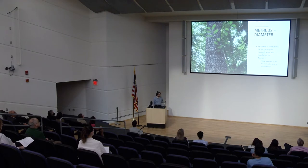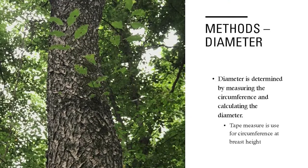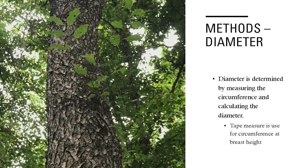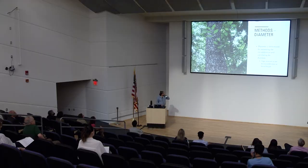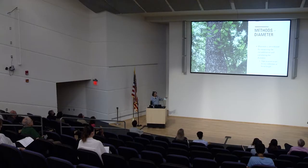The different types of characteristics I used to identify trees on Gaia were diameter, pictures, and all that kind of stuff. For the diameter, I used a tape measure at breast height. I measured the circumference, then divided it by pi to get the diameter of the tree.